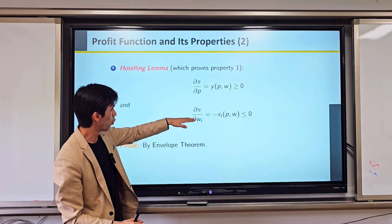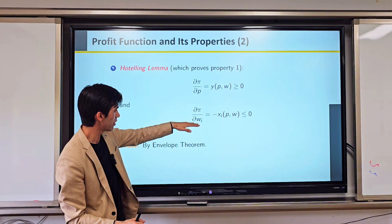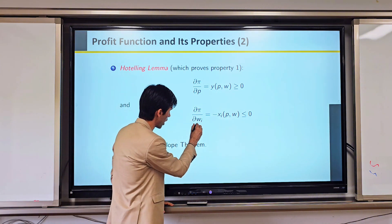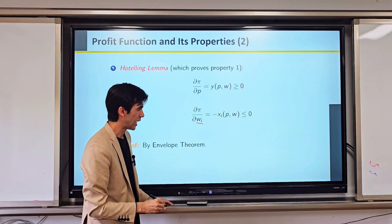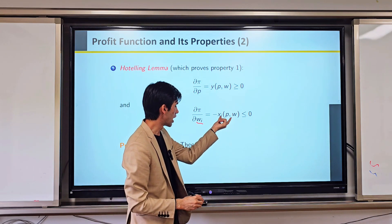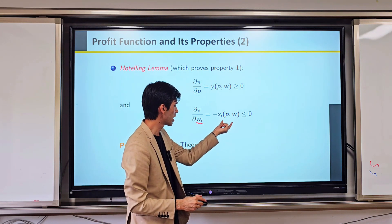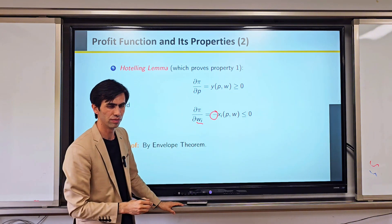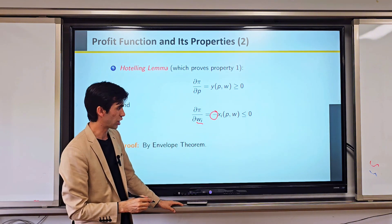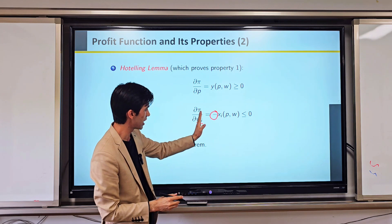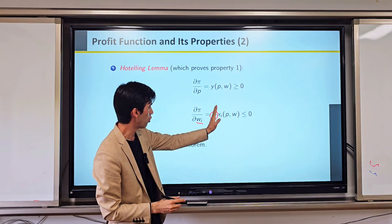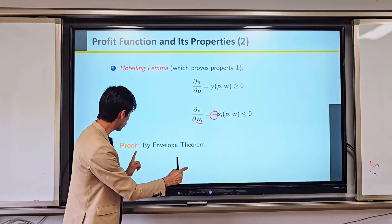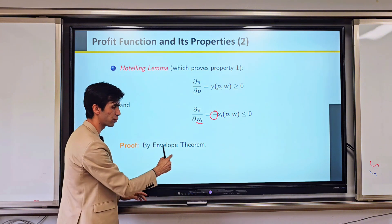And when we take the partial derivative of our profit function with respect to input price, which is W_i, it will give us the unconditional demand function but with some negative value. So if we just get rid of this negative value, we will have our unconditional demand function. The proof comes from the envelope theorem.